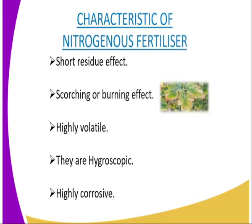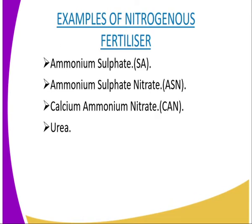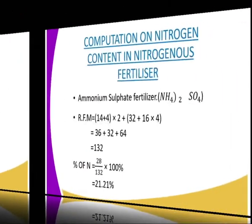We will now look at examples of nitrogenous fertilizers. The first one is ammonium sulfate, or sulfate of ammonia. The second one is ammonium sulfate nitrate, ASN. Then we have calcium ammonium nitrate, CAN. Then we have urea. Those are some of the fertilizers that contain nitrogen, hence they are referred to as nitrogenous fertilizers.